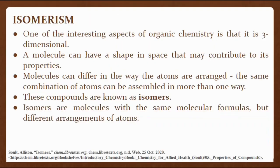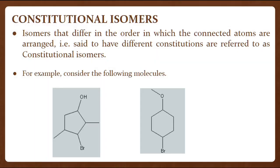One of the interesting aspects of organic chemistry is that it is three-dimensional. A molecule can have a shape in space that may contribute to its properties. Molecules can differ in the way the atoms are arranged. The same combination of atoms can be assembled in more than one way. These compounds are known as isomers. Isomers are molecules with the same molecular formulas but different arrangements of atoms. Isomers that differ in the order in which the connected atoms are arranged — that is, said to have different constitutions — are referred to as constitutional isomers.